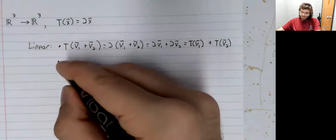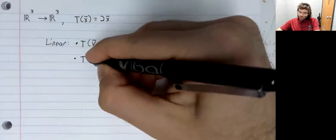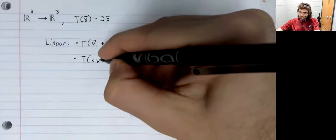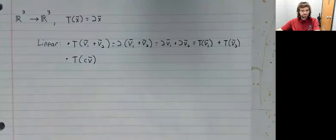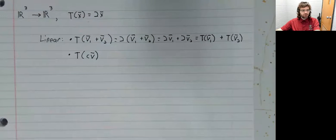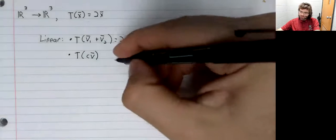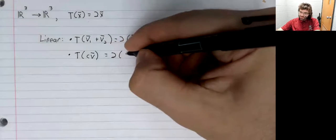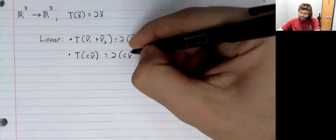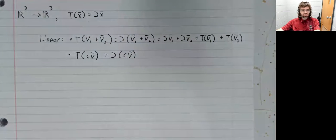Our second condition is that we should be able to pull out scalars. So T of cv, just first by definition, is twice the vector cv.